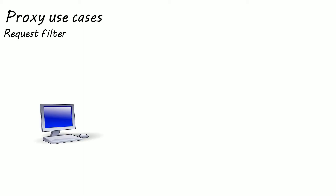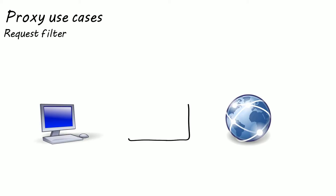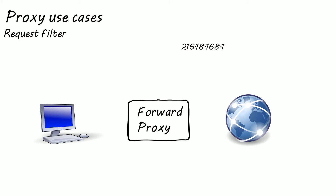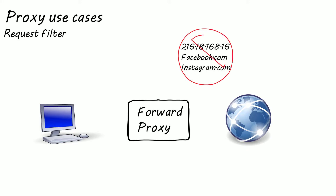One thing proxies are commonly used for is filtering requests. It gives us the ability to block out certain traffic or sites. This can be done by blacklisting certain IP addresses. Any requests with these IPs are filtered out, so if a particular network only had access to the internet via this proxy, then they would not be allowed to access these sites or IPs.